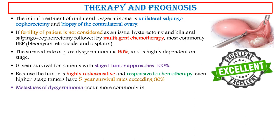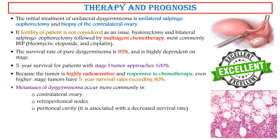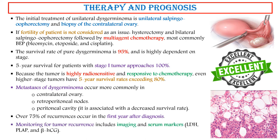Metastasis of dysgerminoma occurs most commonly to the contralateral ovary, retroperitoneal nodes, and peritoneal cavity, and is associated with a decreased survival rate. Over 75% of recurrences occur in the first year after diagnosis. Monitoring for tumor recurrence includes imaging and serum markers such as LDH, PLAP, and beta-HCG.